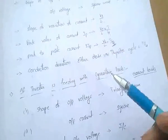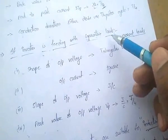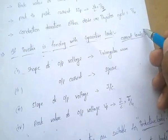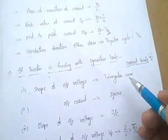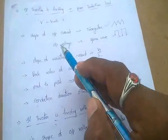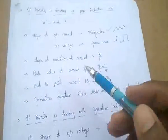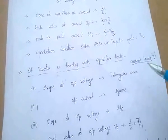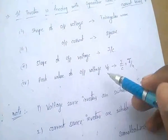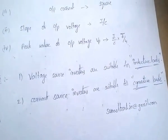If an inverter is feeding a pure capacitive load, current leads the voltage. The shape of the output voltage is triangular wave and the shape of the output current is square wave. The slope of output voltage is I/C, and the peak value of output voltage Vp equals I/C multiplied by T/4.